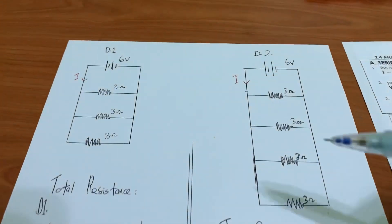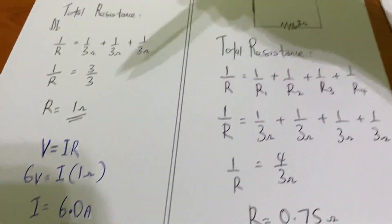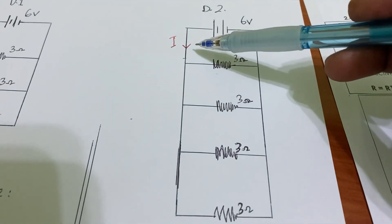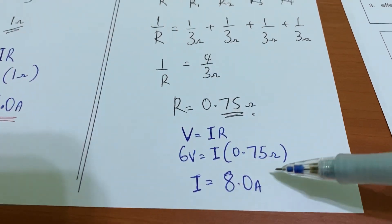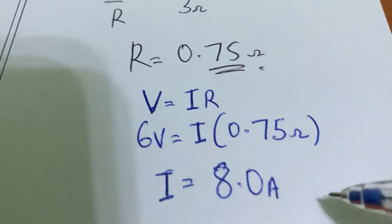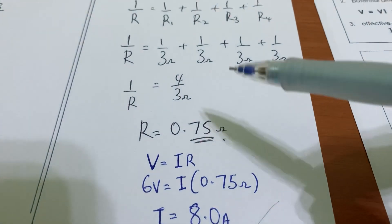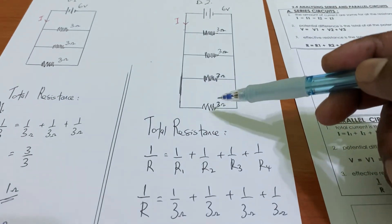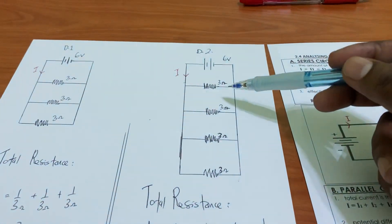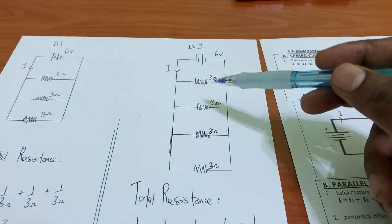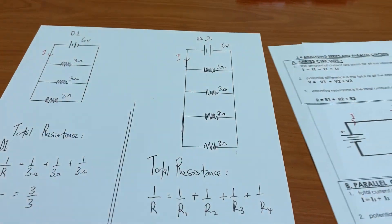What happened to the effective current? Earlier with 3 branches the effective current was 6 ampere. Now with 4 parallel branches, it is 8 ampere. As the number of resistors increases in parallel, the current value increases. This is called the overloading effect — the more parallel branches of electrical appliances, the higher the current that can flow.